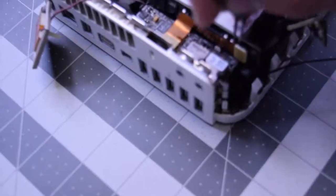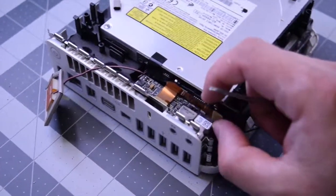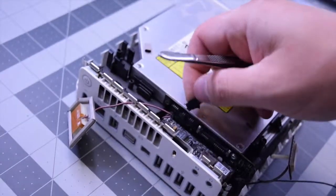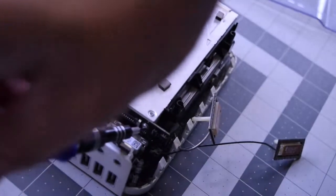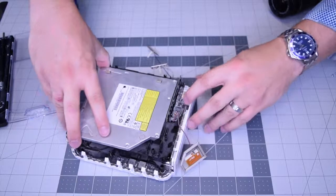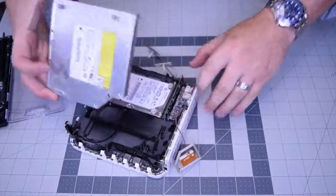Now we need to peel back and disconnect that bridge ribbon cable right there. Gently disconnect that. Peel back that little piece of tape and now the fifth and final screw right behind there. That will release the DVD drive and that should be able to come out, slide out just like that.